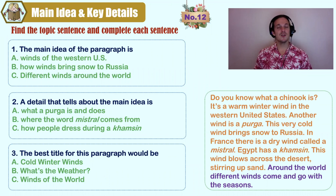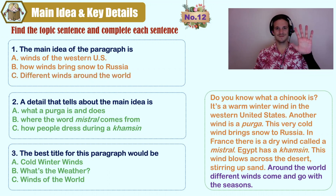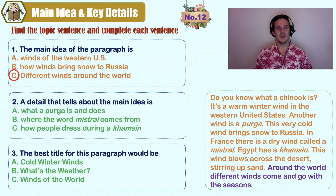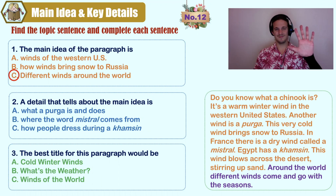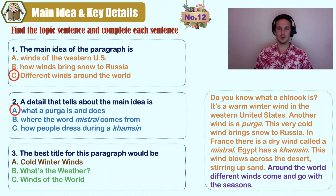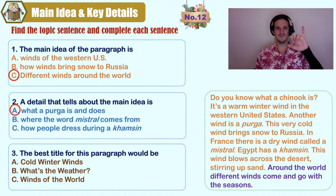Now it's time for you to tell me the answers. What is the main idea? A) winds of the western United States, B) how winds bring snow to Russia, C) different winds around the world. C — different winds around the world. A detail that talks about the main idea: A) what a purga is and does, B) where does the word mistral come from, C) how people dress during a camzin. What a purga is and does — A. And the best title: A) cold winter winds, B) what's the weather, C) winds of the world. Winds of the world — C.